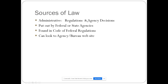Then we have administrative law — regulations, rules, and agency decisions. These are put out by agencies, either federal or state. For federal agencies you're going to find those in the Code of Federal Regulations, and then there's the Illinois Administrative Code for the state. You can often go directly to the agency's website to find those, or use Lexis or Westlaw.